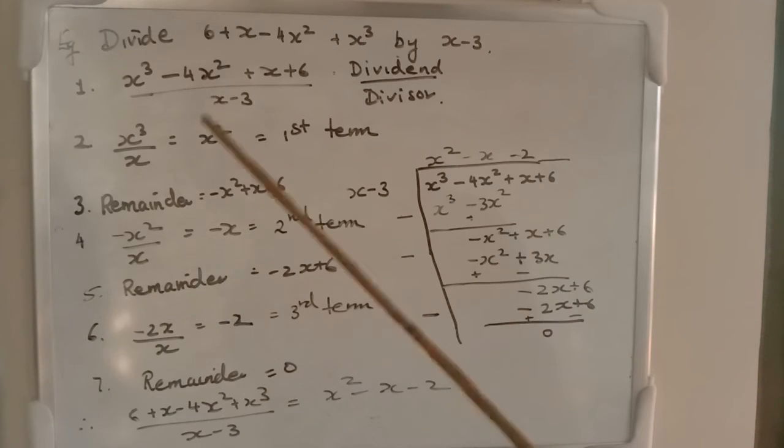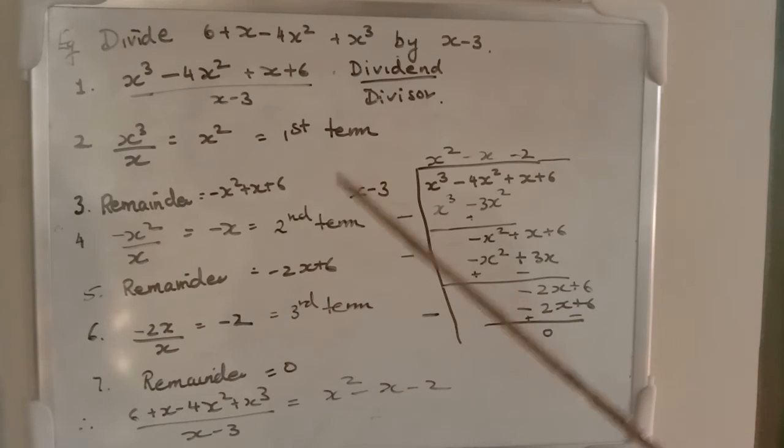Again, we will repeat the second step where we have to divide by first term of the divisor. So, -2x by x is equal to -2. That is the third term.